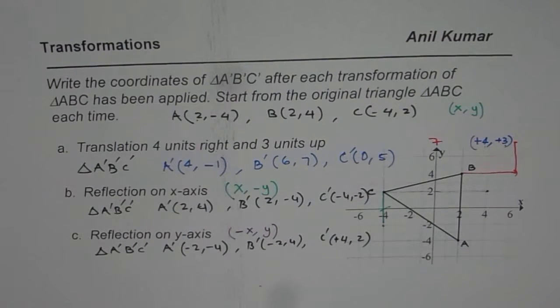Take negative of the x value: A' is (-2, -4), B' is (-2, 4), and C' is (4, 2). That is how you could get the transformed triangle after performing the given transformations. I hope that helps, thank you and all the best.